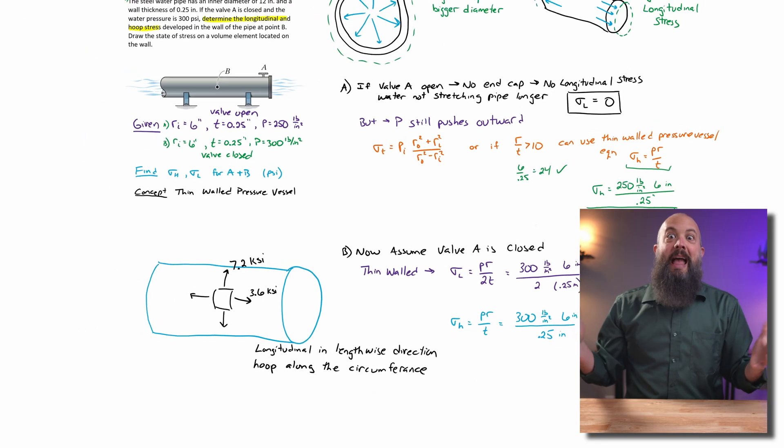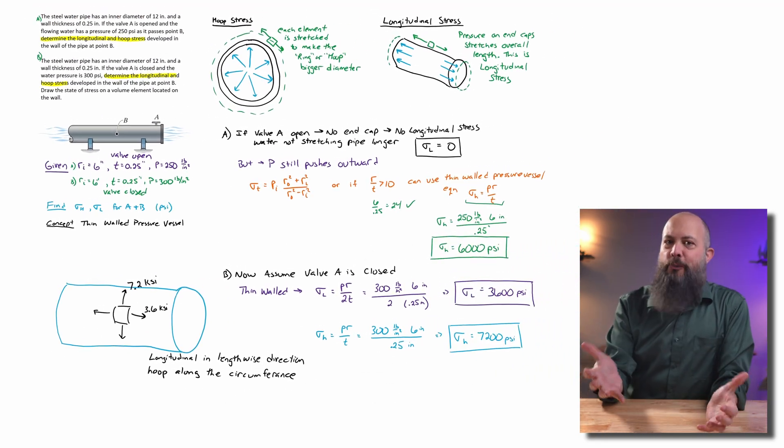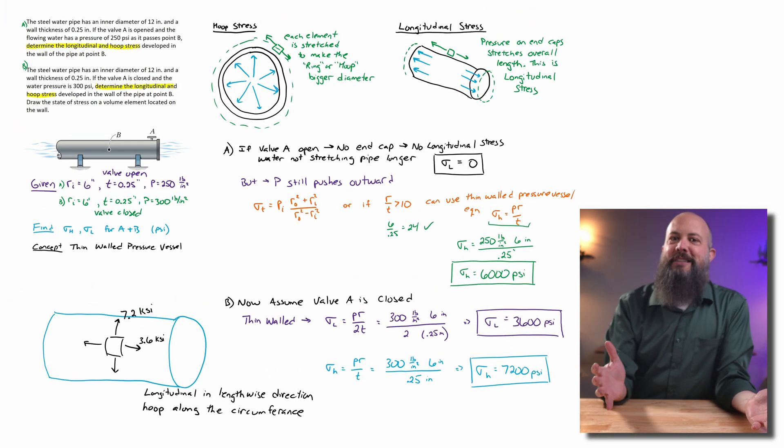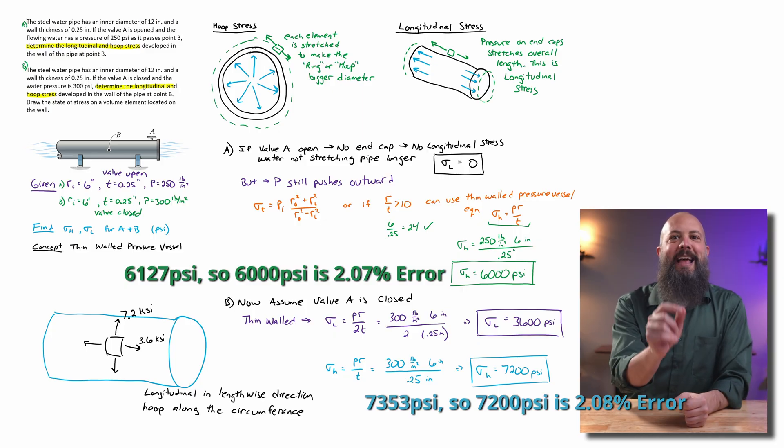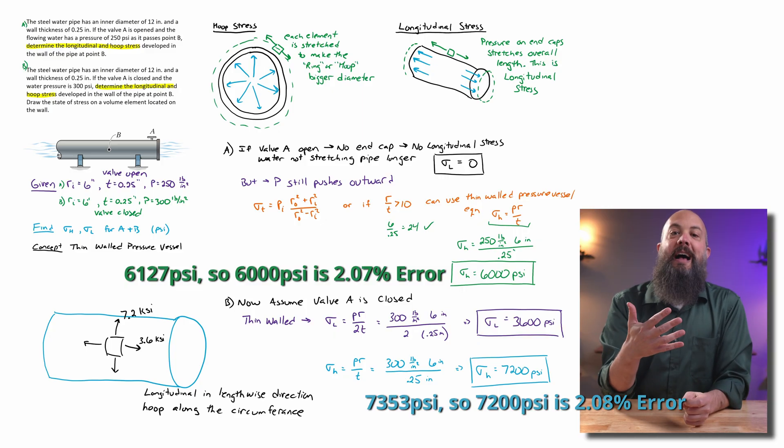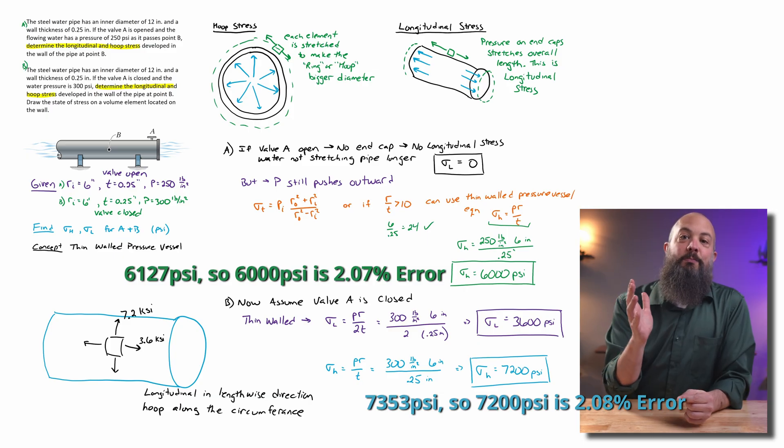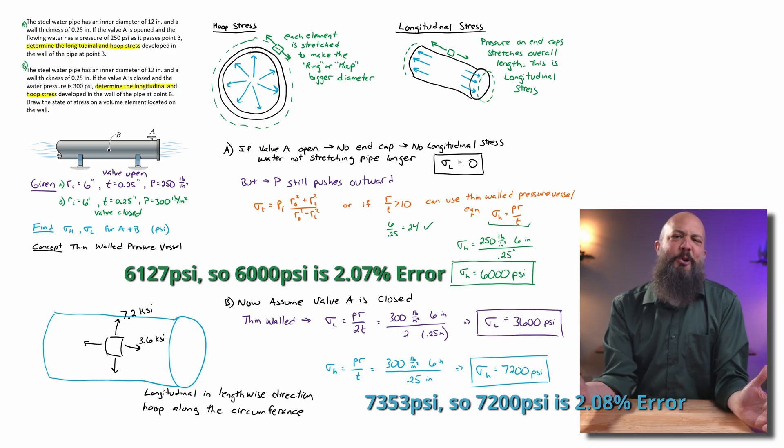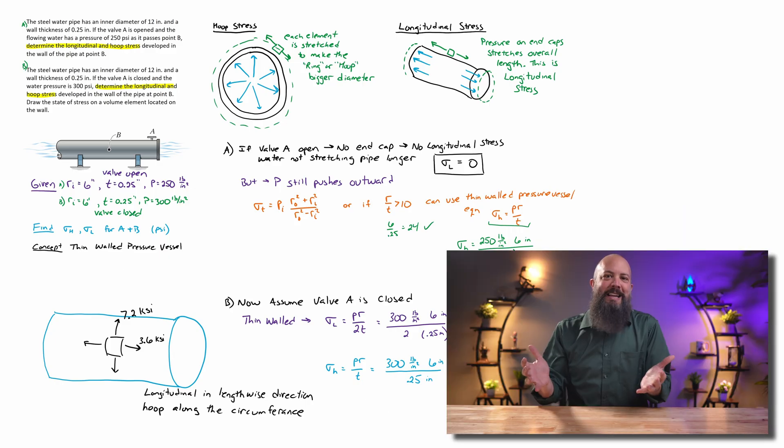And so what would have happened if we hadn't made this thin wall assumption? What if we had actually used that equation from the FE reference manual? You can see now if we plugged in the actual radius and thickness, we would have gotten instead for hoop stress 61.27 PSI and 73.53 PSI for the second part, which is only an error around 2 or 3%. When you get an error that's less than 5% or less than 2%, that's good justification that your simplification, that your assumptions were good ones.